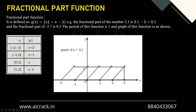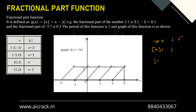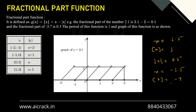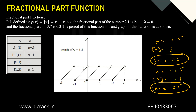Now let's talk about the Fraction Part Function. It is the remainder part of the input value which is left once we subtract the GIF value. It's defined as {x} = x - GIF(x). For x = 3.5: GIF = 3, so {x} = 0.5. For x = -3.5, many people incorrectly say -0.5, but GIF(-3.5) = -4, so {x} = -3.5 - (-4) = 0.5. Regardless of whether the input is positive or negative, the fractional part is always positive.